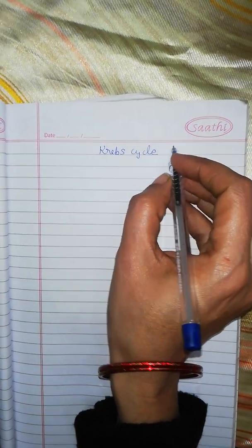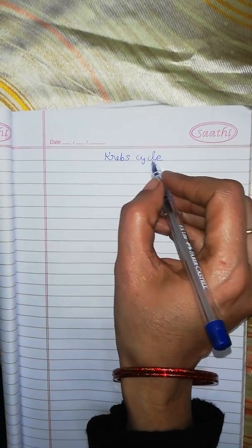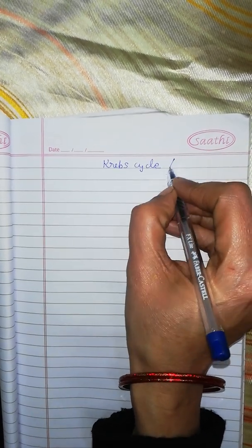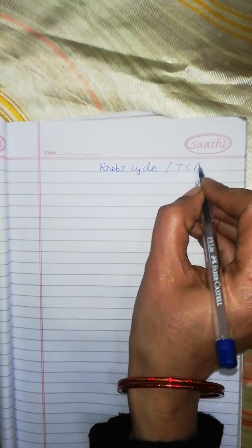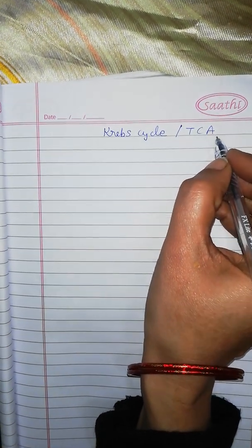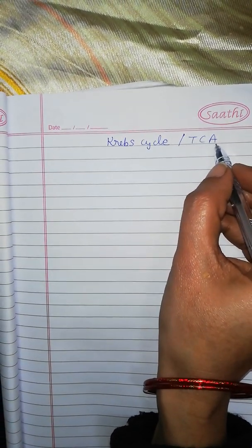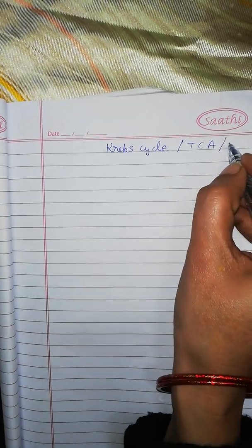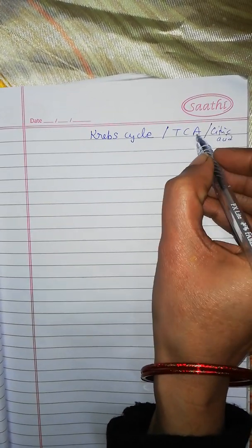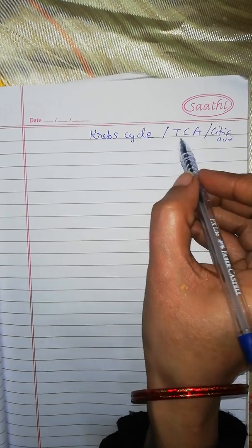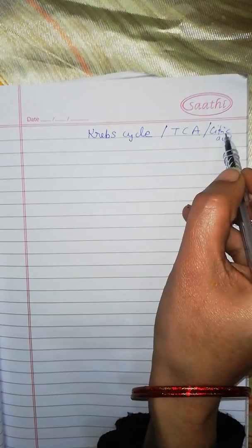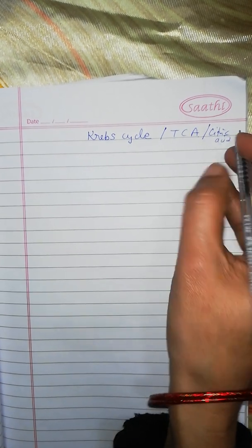Krebs cycle is known as Krebs cycle because it was described by Krebs. This cycle is also known as TCA cycle or tricarboxylic acid cycle because the product which is formed, that is citric acid, contains three carboxylic groups. That is why this cycle is called tricarboxylic acid cycle.